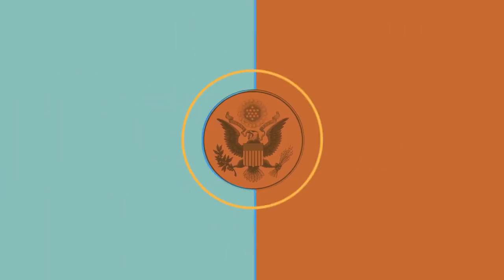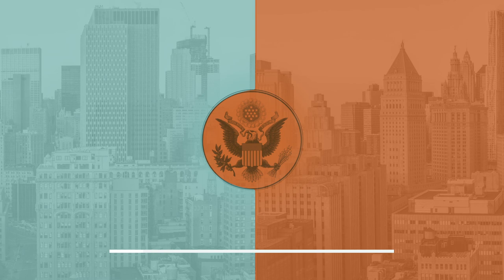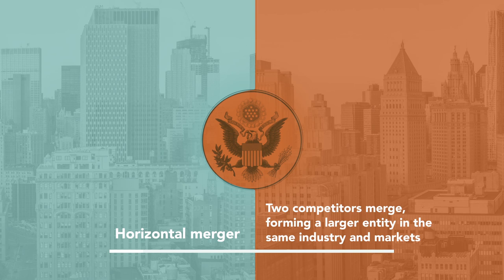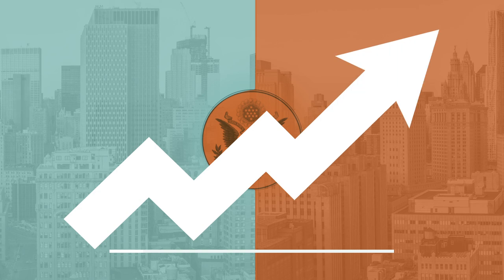The first substantial merger activity involving major industries of the U.S. began in the 1890s and continued through the early 20th century. During this early period, merger activity was mostly between large corporate entities involving horizontal mergers. In a horizontal merger, two competitors merge, forming a larger entity in the same industry and markets. These types of mergers added to the concentration of market power in the hands of a few managers.